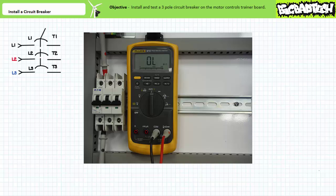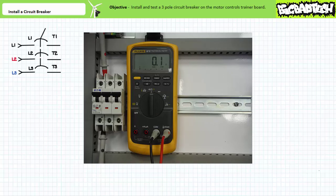First we'll test the basic operation of the circuit breaker. When the manual switch is pulled down the ohmmeter indicates the circuit breaker L to T contacts are open. When the manual switch is pushed up the ohmmeter indicates the circuit breaker L to T primary contacts are closed.